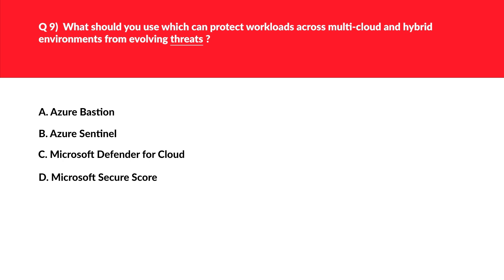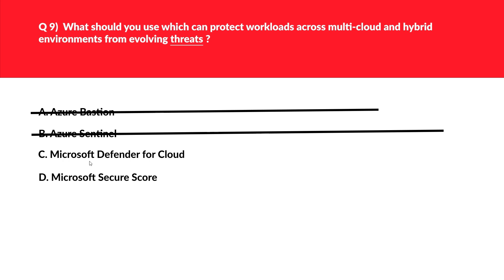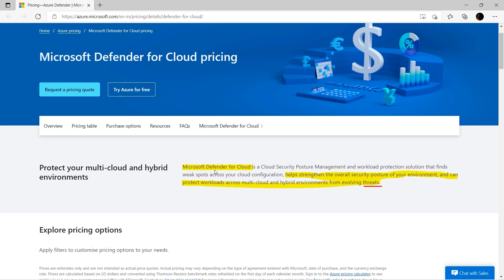This question is about protecting workloads from threats. Option A, Azure Bastion, provides secure RDP or SSH connectivity to VMs — not related to threats. Option B, Azure Sentinel, is related to security analytics which is AI-based — the question has no mention of AI, so we'll reject this. Option C, Microsoft Defender for Cloud: whenever you see keywords like 'threat detection' or 'threats,' chances of Microsoft Defender being the correct answer are very high — we'll keep this. Option D, Microsoft Secure Score, is a measurement of an organization's security posture — seems incorrect as per the question.